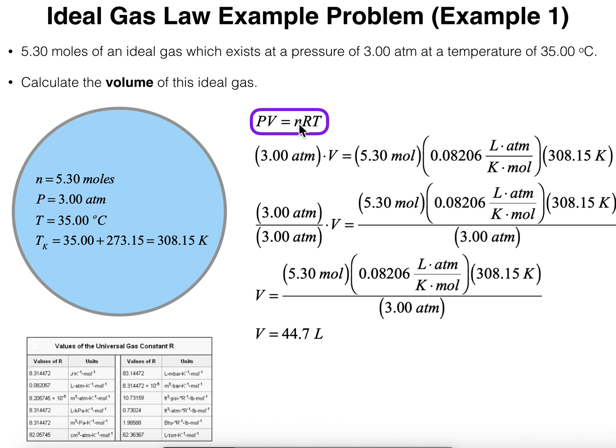We obviously know R because R is the ideal gas constant. We can either memorize that or we can look at it in a table of values, which I have here at the bottom. We'll eventually use one of these. We know the number of moles, N. That was given as 5.3 moles. That's two of them. We know the pressure. The pressure is given as three atmospheres. That's three. And then we also know the temperature, 35 degrees Celsius. So that gives us four of the five variables. We can then solve for the volume.